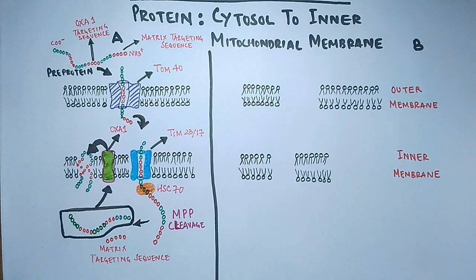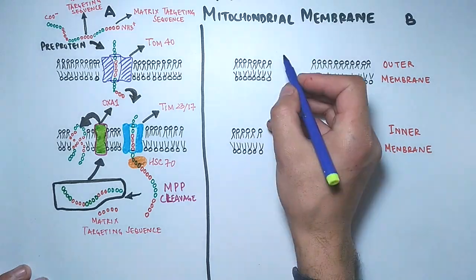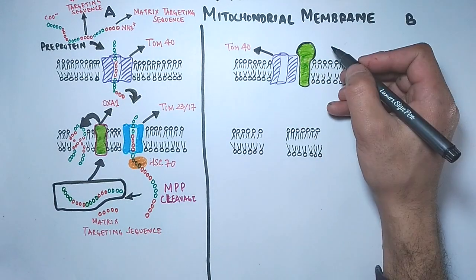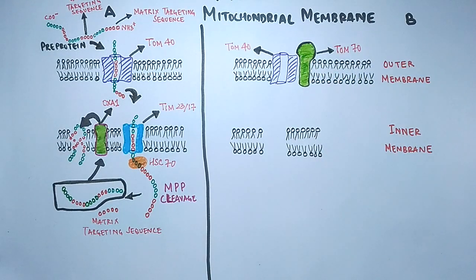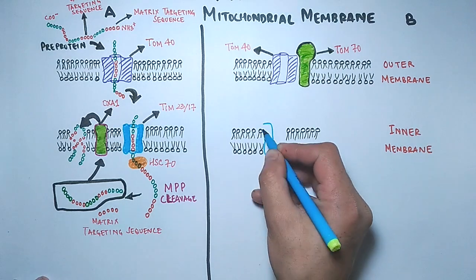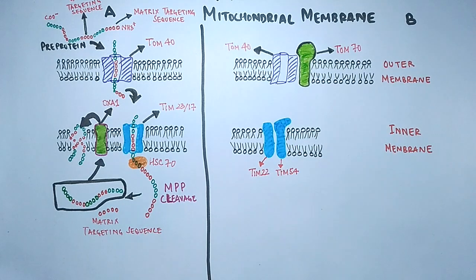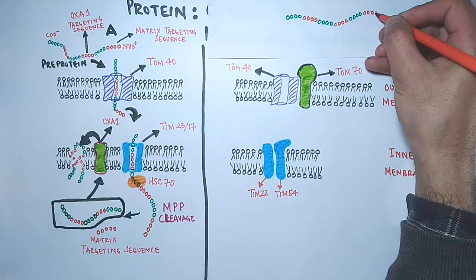In Pathway B, we will see how proteins with internal targeting sequences are transported directly into the inner mitochondrial membrane. In this pathway, the outer membrane has the major translocon TOM40, along with TOM70. TOM40 forms the protein pore, while TOM70 acts as an important receptor for internal targeting sequences. On the inner membrane, it has the TIM22/54 complex, which acts as both a translocase and an insertase.